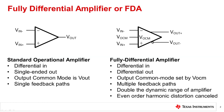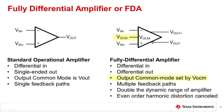Here we introduce the fully differential amplifier. An FDA is similar to a voltage feedback op amp with some key differences. Both the FDA and op amp have differential inputs, but the FDA has a differential output, Vout plus and Vout minus. Furthermore, the FDA has an input pin, VOCM, that controls the common mode of the output signal. Also, the op amp has a single feedback path, whereas the FDA has two feedback paths.